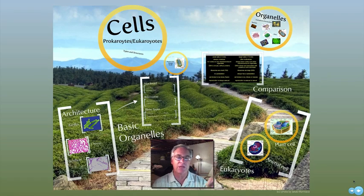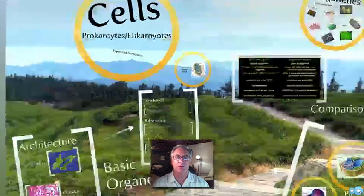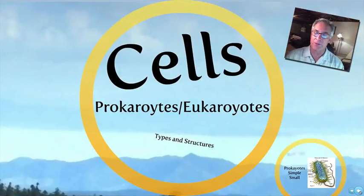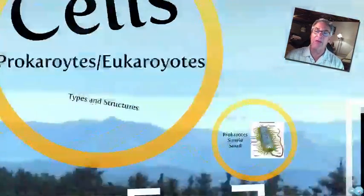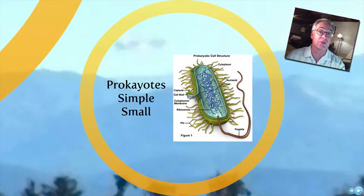I'd like to really consider their types and structures. I'd like to first of all start with the prokaryotes. The prokaryotes are relatively simple, basic type of cells, and many scientists believe that eukaryotic cells have evolved from the prokaryotic ones.